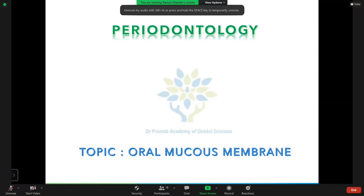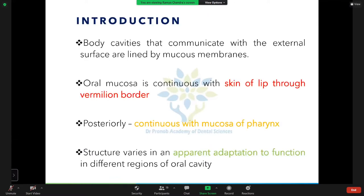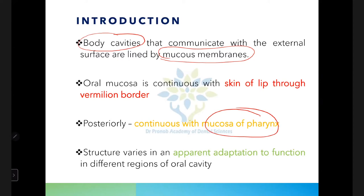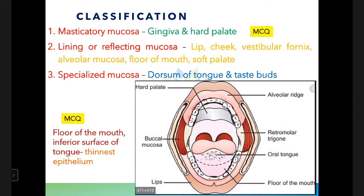Today's topic is about oral mucous membranes, which has a lot of exam questions. Mucous membranes are coverings of body cavities that communicate with external surfaces. The oral mucous membrane lines the oral cavity and is continuous anteriorly with the skin of the lip and posteriorly with the mucosa of the pharynx.